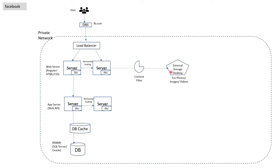Other things which are in huge amounts on Facebook are messages, likes and comments. This data is so big that your relational DB is unable to handle them. Then you need a NoSQL DB like MongoDB, which is quite popular nowadays to store such data. NoSQL databases are very much faster in comparison to relational databases.